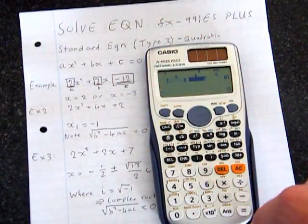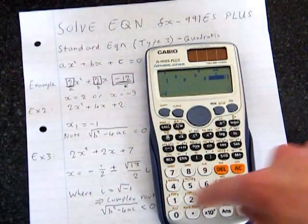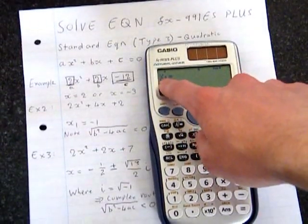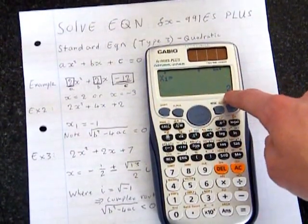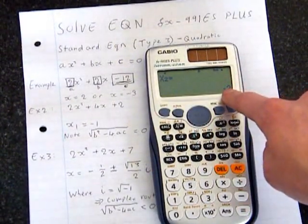So we just put this into this calculator, so we press 2 equals, then put in b, 2 equals, and c is minus 12 equals. Press equals again, and it solves it. So it tells us that x1 is 2. Press equals again, it gives us a second solution, which is minus 3.